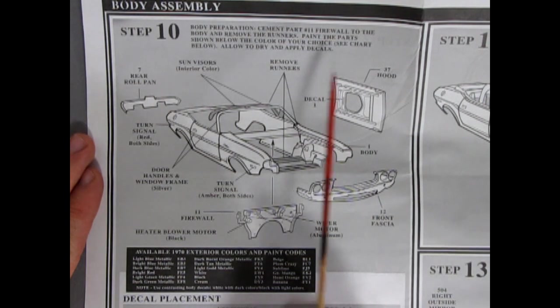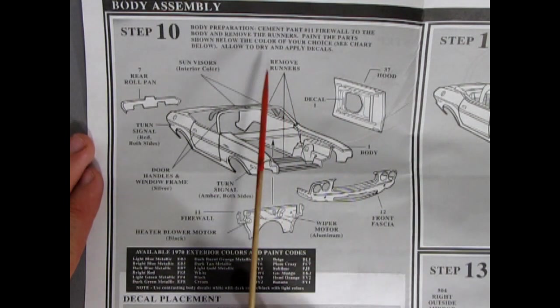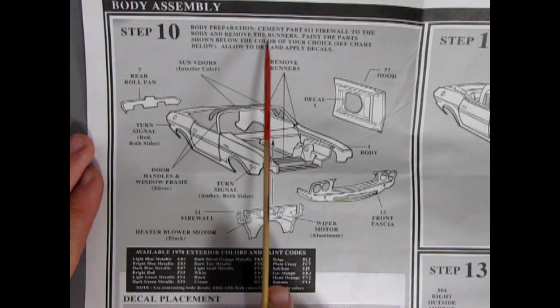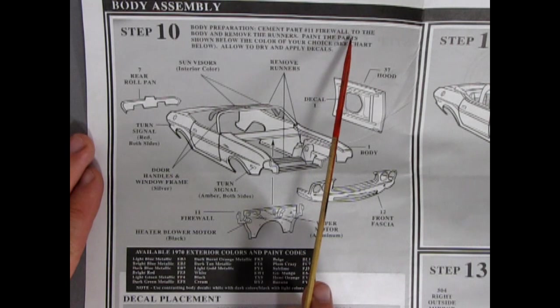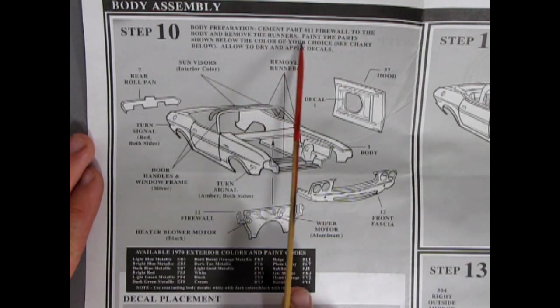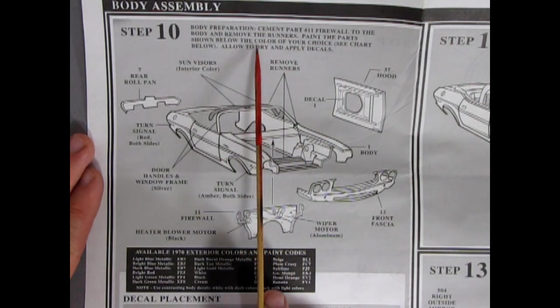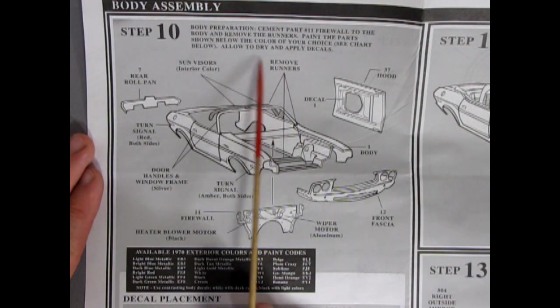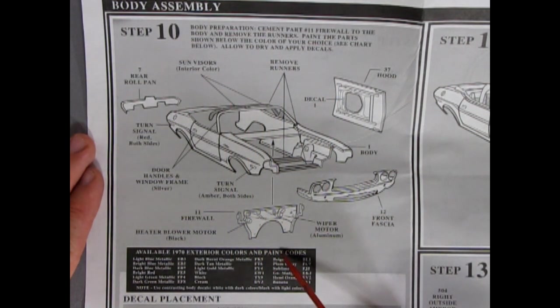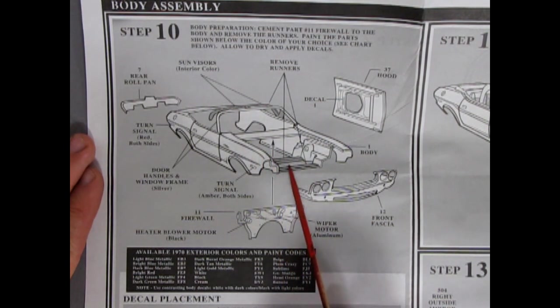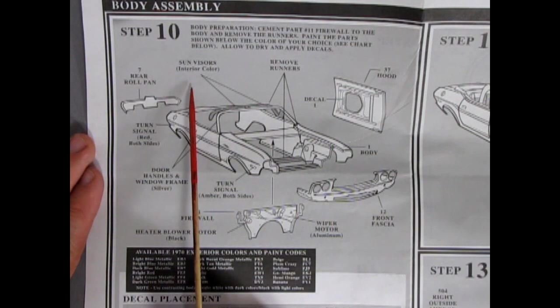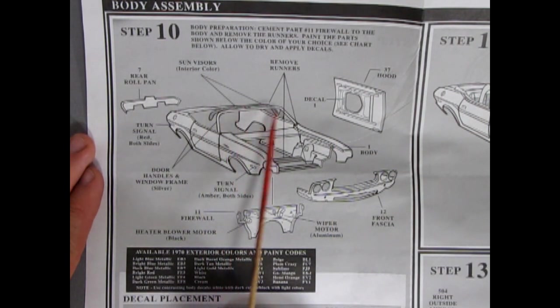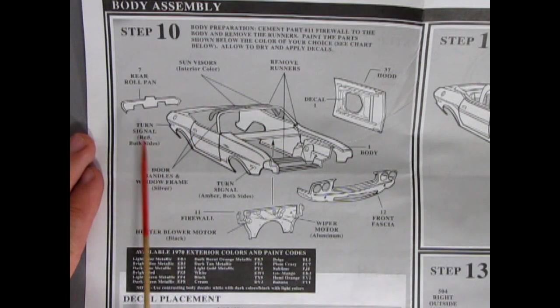And here's our body going together. Body preparation for step one. Step ten. Body preparation. Cement part 11 firewall to the body and remove the runners. Paint the parts shown below the color of your choice. See chart below. Allow to dry and apply decals. So it looks like you put this in first and then cut out these extra bits. Sun visors are in this and you paint them in the interior color. There's your rolled pan at the back. Your body and the front face.